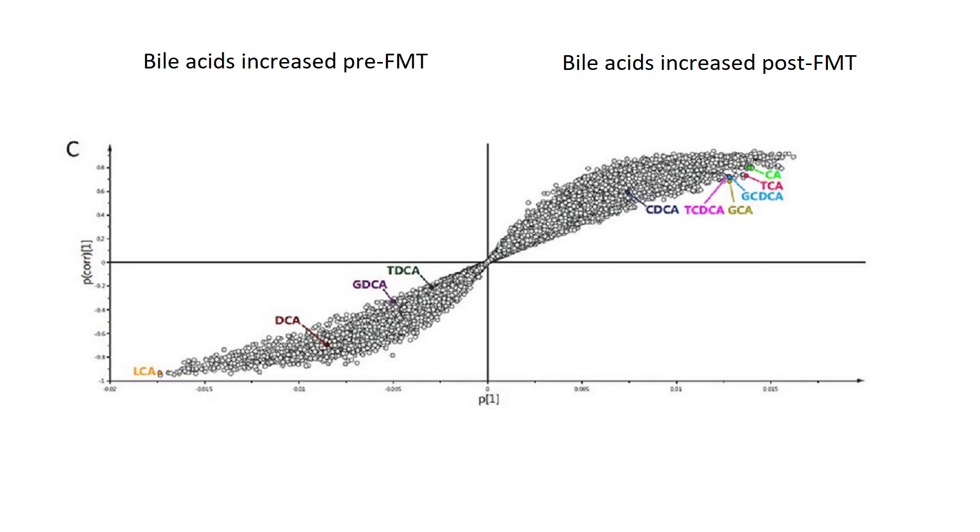We next used UPLC-MS to profile the bile acids within the stool samples of patients receiving FMT, together with their donors. Using both multivariate and univariate analysis, we demonstrated that successful FMT for RCDI was associated with a marked, immediate, and sustained reduction in the gut levels of taurocholic acid, a major pro-germinative bile acid. Similarly, FMT was associated with restoration of secondary bile acids, which are well recognized to inhibit the vegetative growth of C. diff, at least in vitro. Correlation analysis further demonstrated that the relative abundance within faeces of bacterial genera containing BSH-producing bacteria, such as Bacteroides, was negatively associated with taurocholic acid.